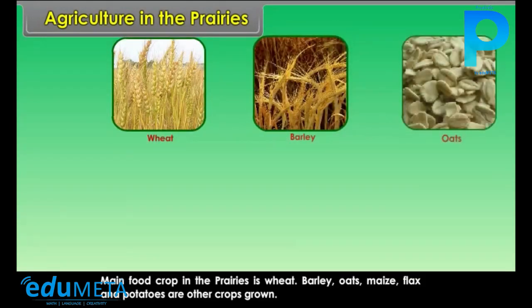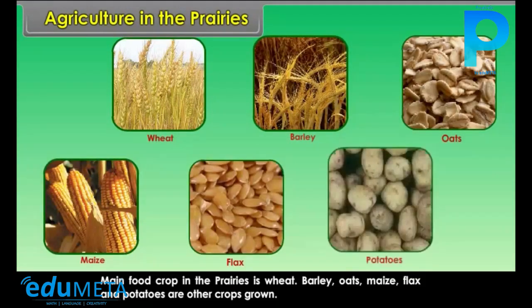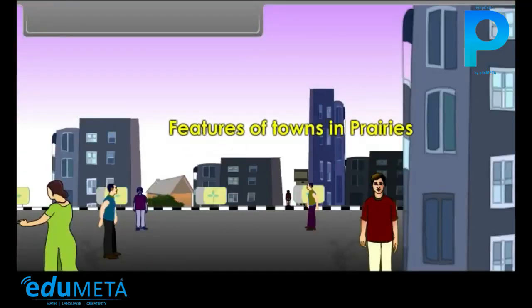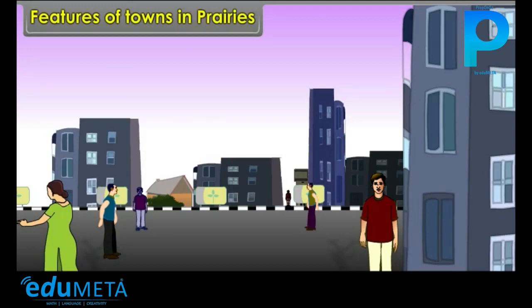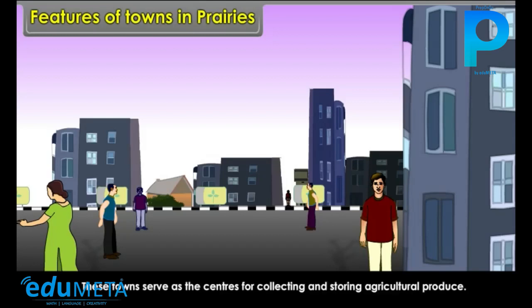The main food crop in the Prairies is wheat. Barley, oats, maize, flax and potatoes are the other crops grown. Major towns of the Prairies are connected with big railway junctions. These towns serve as the centers for collecting and storing agricultural produce.